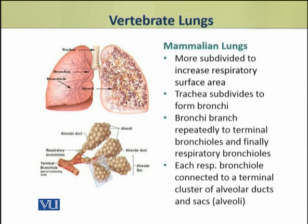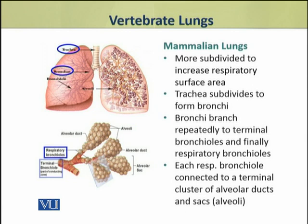Now we shall discuss the mammalian lungs. Mammalian lungs are more subdivided to increase the respiratory surface area. In mammals, the trachea subdivides to form bronchi, which branch repeatedly to terminal bronchioles. These terminal bronchioles divide to finally form the respiratory bronchioles. Each respiratory bronchiole is attached to a cluster of alveolar ducts associated with alveolar sacs, which form the respiratory epithelium and are the sites of gas exchange.